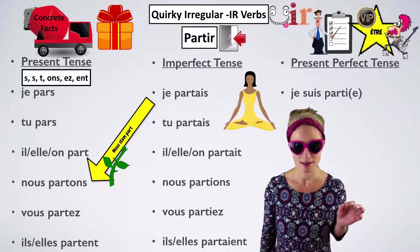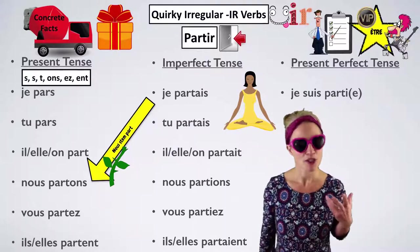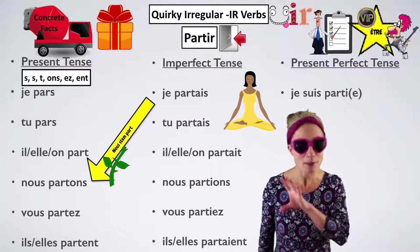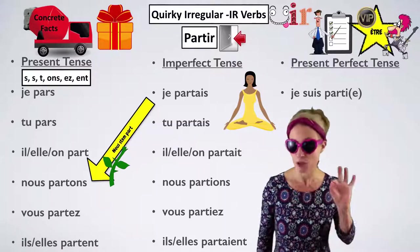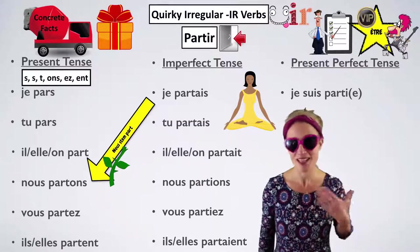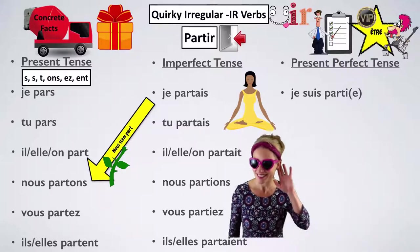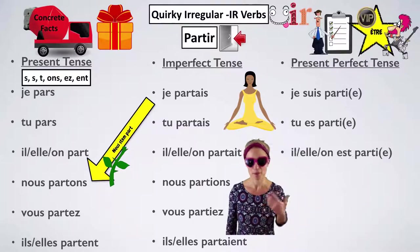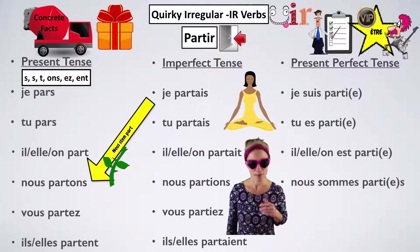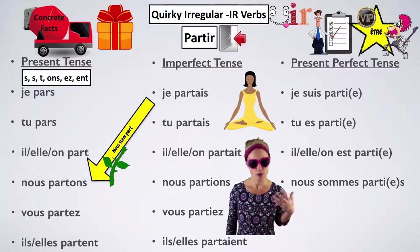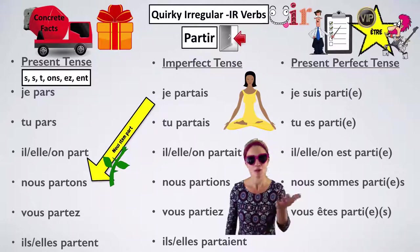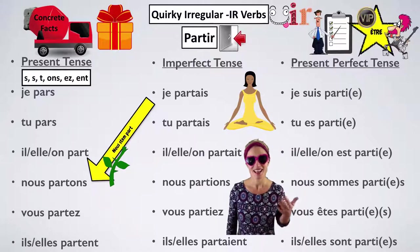Je suis partie. And because it's with 'être,' your past participle has to agree with the subject. So if you're a woman, you would add an extra E — not that you can hear it. Tu es partie. Il/elle/on est parti(e). Nous sommes partis — it has an S on because 'nous' is plural, but you can't hear it. Vous êtes partis. Ils/elles sont partis.